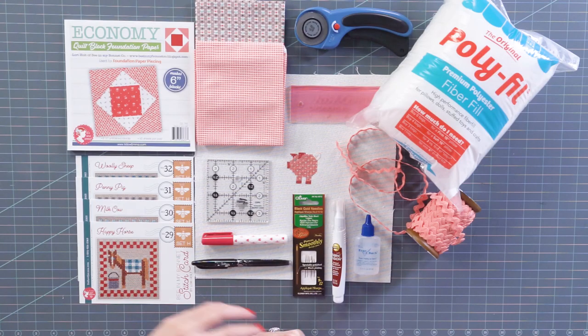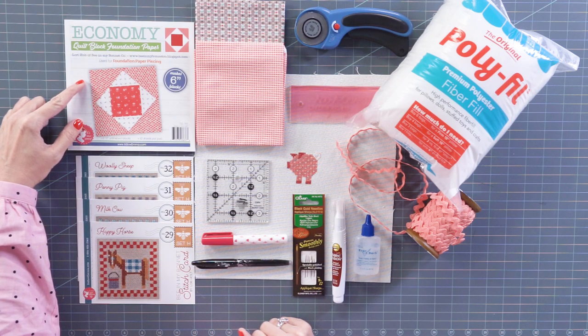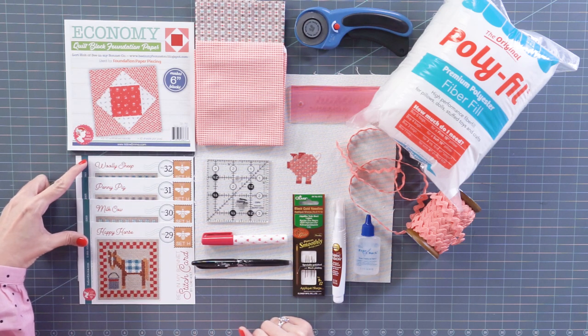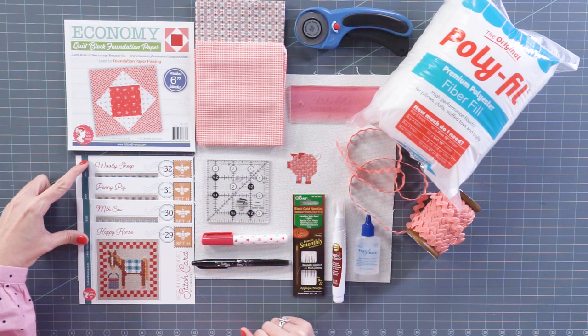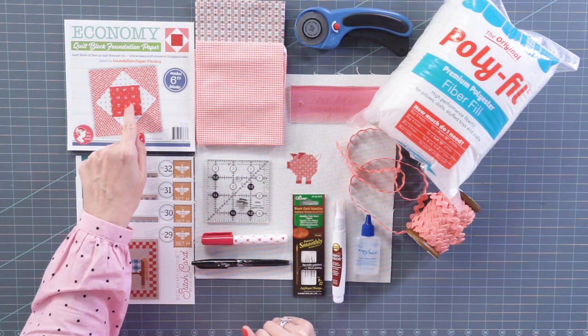Here are the supplies you need to make your Lori Holt bowl filler pillow. You definitely need the six inch Economy paper by It's Sew Emma and Lori Holt, and you definitely need a stitched stitch card. Any of Lori Holt's stitch cards will fit. Today we're doing Penny Pig, and he's gonna go right in the center.